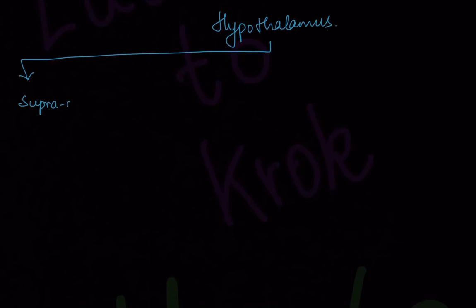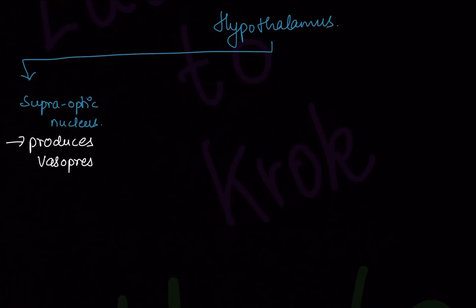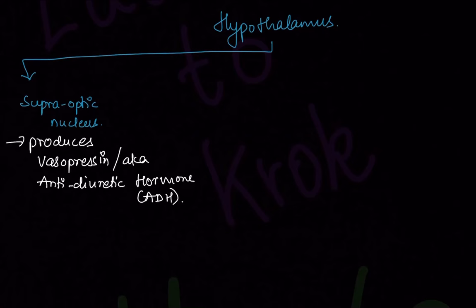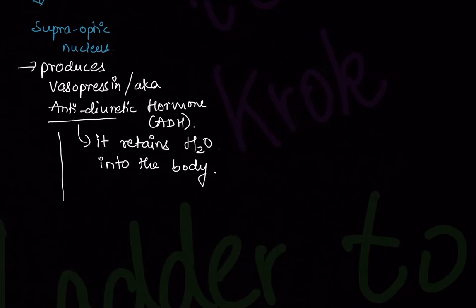Starting with the first one: the supraoptic nucleus. You must know that hypothalamus produces two hormones — anti-diuretic hormone and oxytocin. The supraoptic nucleus produces vasopressin, also known as anti-diuretic hormone, or ADH in short form.